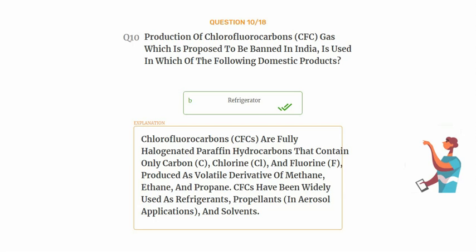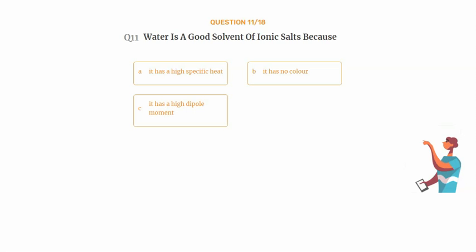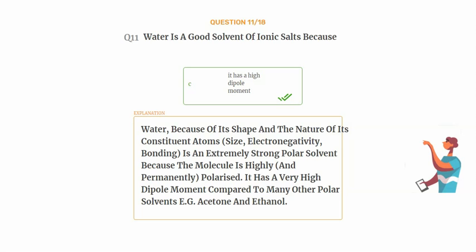Question number eleven: water is a good solvent of ionic salts because — option A: it has a high specific heat, option B: it has no color, option C: it has a high dipole moment, option D: it has a high boiling point. The correct answer is option C: it has a high dipole moment. Water, because of its shape and the nature of its constituent atoms — size, electronegativity, bonding — is an extremely strong polar solvent, as the molecule is highly and permanently polarized, giving it a very high dipole moment compared to many other polar solvents such as acetone and ethanol.